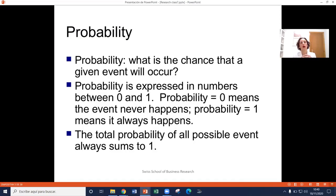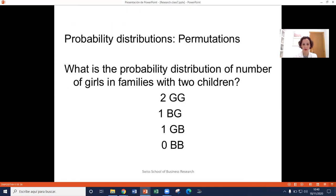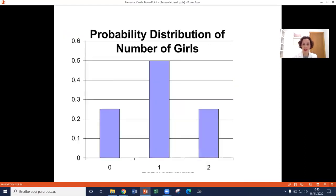So let's think of that probability. When we think of probability, the total probability will always sum to 1. And there are permutations. So what is the probability, for example, that there will be girls in families of two children? We can see here represented in the graph, there's 0, boy boy, 2 girl girl, and 1 where there is a girl and boy or boy and girl.